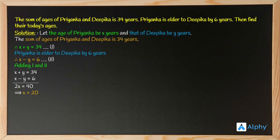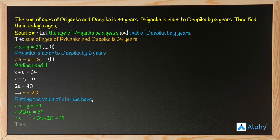Now we will find the age of Deepika by substituting the value of x in equation 1. We have x plus y equals 34. Putting x equals 20: 20 plus y equals 34, so y equals 34 minus 20, which is 14. Thus, Priyanka's age is 20 years and Deepika's age is 14 years.